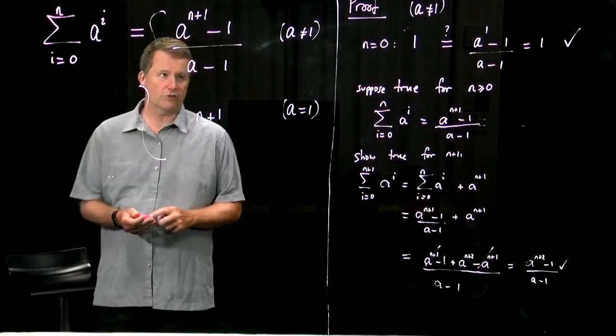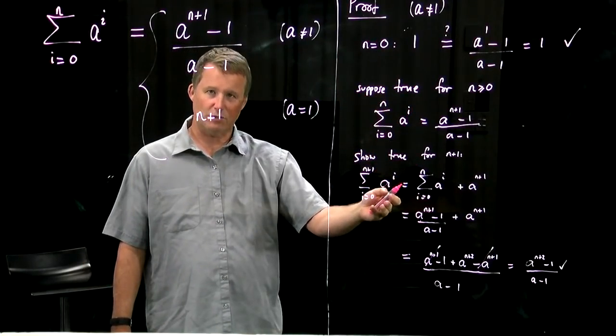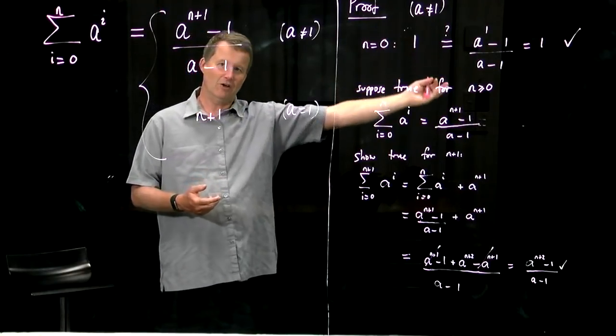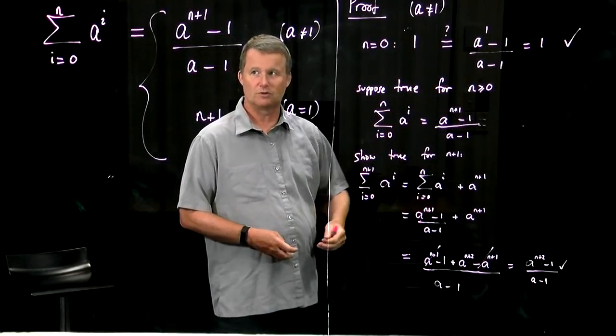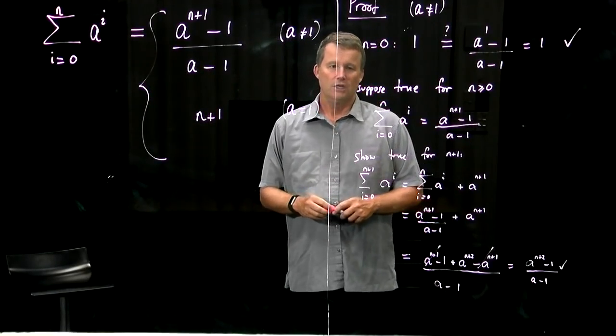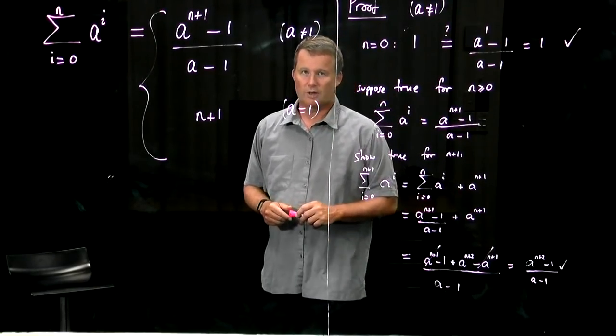And so it works for n equals 0. If it works for any n, then it works for the next one. Therefore, by principle of mathematical induction, it holds for all n. And that's what we're trying to show here - n was arbitrary natural number. So that's the geometric series, which we will use quite a bit.